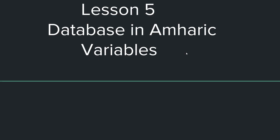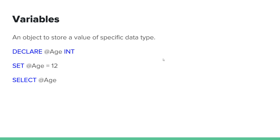Salam, this is lesson 5. We are busy with variables now. A variable is an object used to store a value of a specific data type. An object can be of type integer, and you declare the value of a variable.